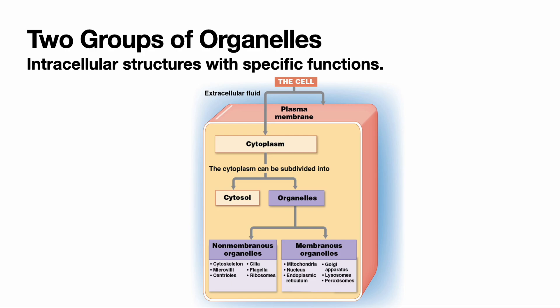We can divide organelles into two groups: non-membranous organelles and membranous organelles. True organelles are the membranous organelles — their structure includes a bilipid cell membrane around the outside. That's going to include things like mitochondria, the nucleus itself, and endoplasmic reticulum, among others.